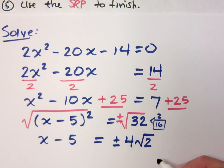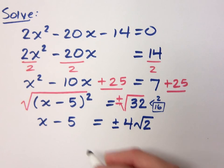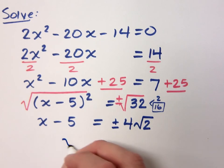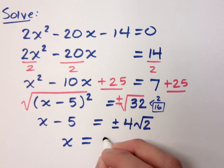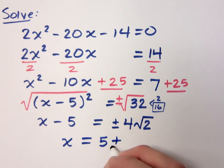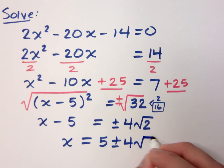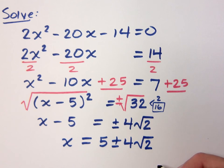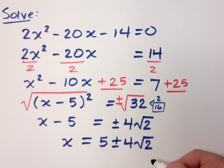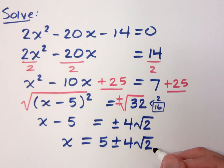And how do I finish? x equals 5 plus or minus 4 square roots of 2. Could I separate this into two answers? I could, but it's not going to make a difference because I still have this radical, and it's not going to simplify. So I'm done with that.